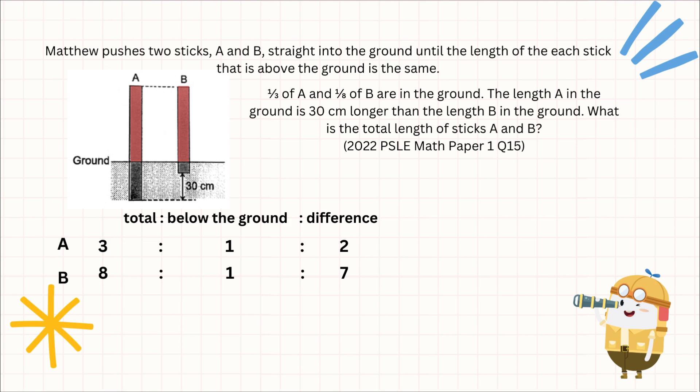Now, as mentioned, these two sections of A and B above the ground are going to be equal. So we should try to make both of them the same. In this case, we multiply by 7 to the top and multiply by 2 to the bottom with the same concept for total, below, and the difference. Now you can obtain the values of 21:7:14 and 16:2:14.